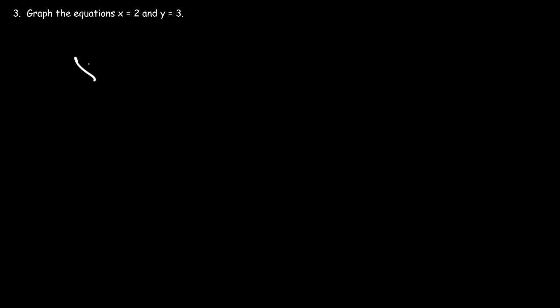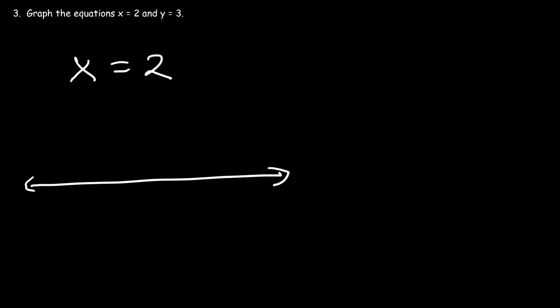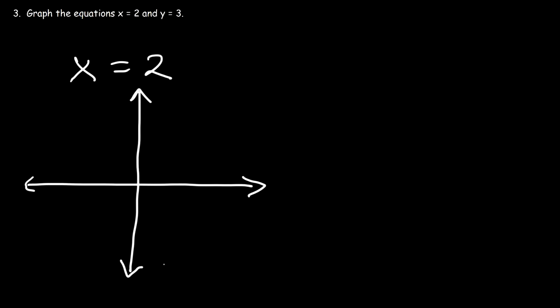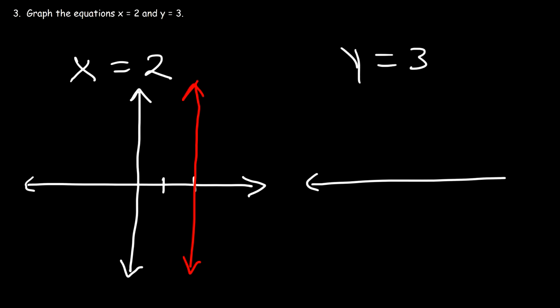Number three: graph the equations x equals 2 and y equals 3. Whenever x is equal to a number, the graph is a vertical line — so x equals 2 is a vertical line at x equals 2. For y equals 3, the graph is simply a horizontal line where y is 3.